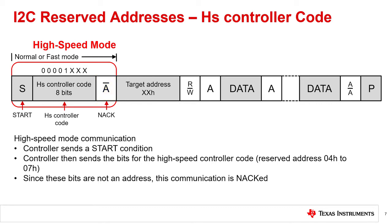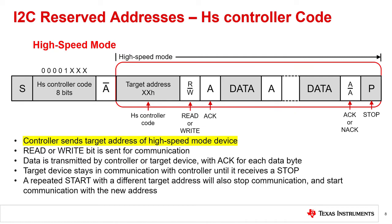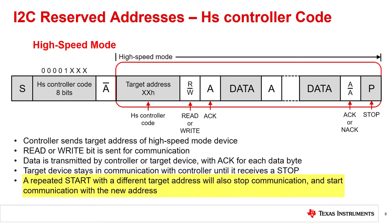However, the controller code enables high-speed mode for all devices that are capable of high-speed mode. Even though the controller code is nacked, the device internal circuits for high-speed mode are enabled. The controller then sends the target address of the high-speed mode device and follows with a read or write bit for communication. Data is transmitted by the controller or target with acknowledgement for each data byte similar to the standard I2C communication. The target device continues communication until it receives a stop condition or it receives a repeated start for a new target address.